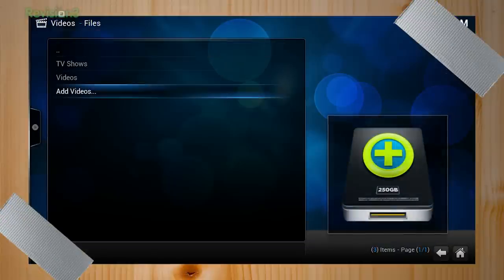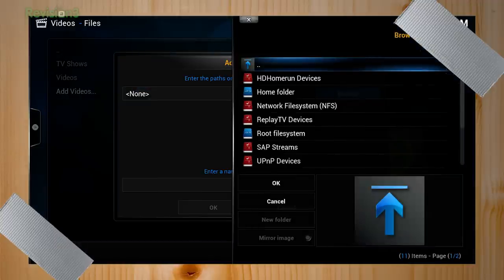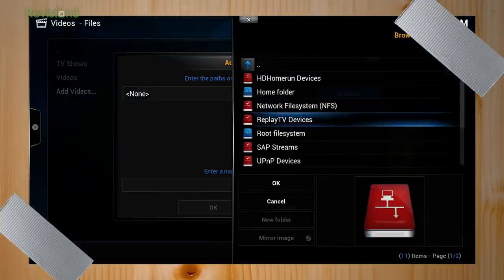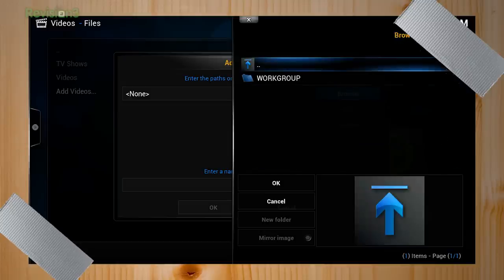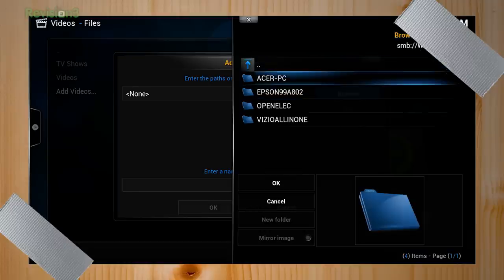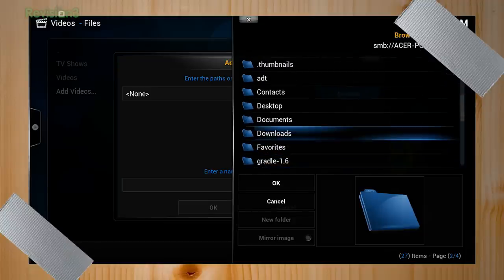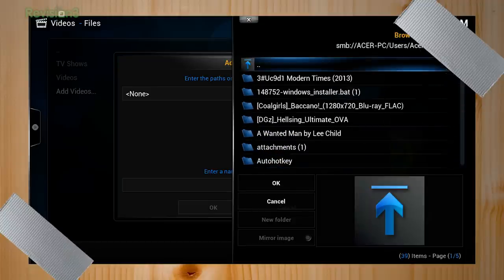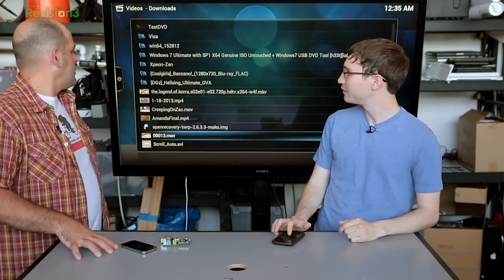It's very similar. You go into add videos, you browse. And then from there, you want to go all the way down to Windows Network SMB. And then from there, you'll see your work group and the PC that you want. And then you should hopefully see the folder that you shared. So in this case, I shared my downloads folder. So we'll go ahead and add that. All right, so our downloads folder is added. And then you can see all of the different stuff that we have here.